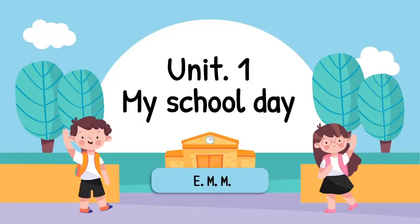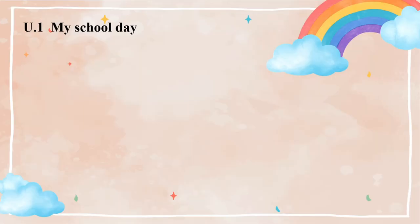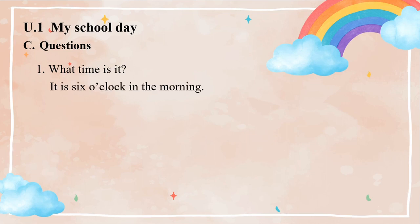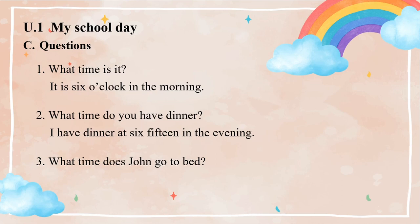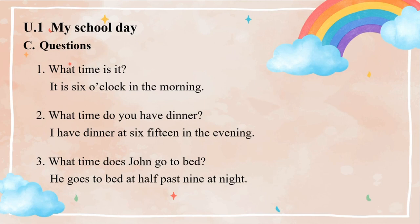Unit 1: My School Day. Part C: Questions. Number 1: What time do you get up? It is 6 o'clock in the morning. Number 2: What time do you have dinner? I have dinner at 6:15 in the evening. Number 3: What time does John go to bed? He goes to bed at half past nine at night.